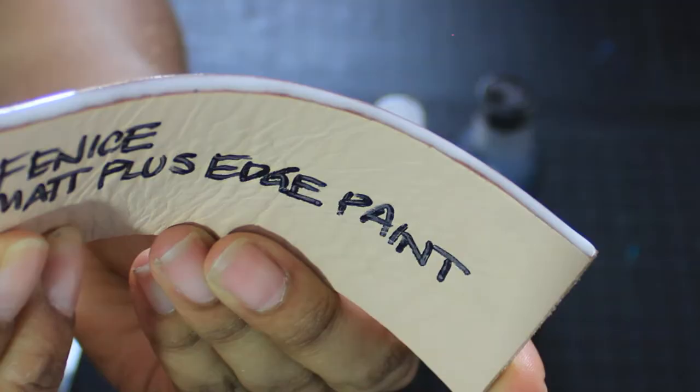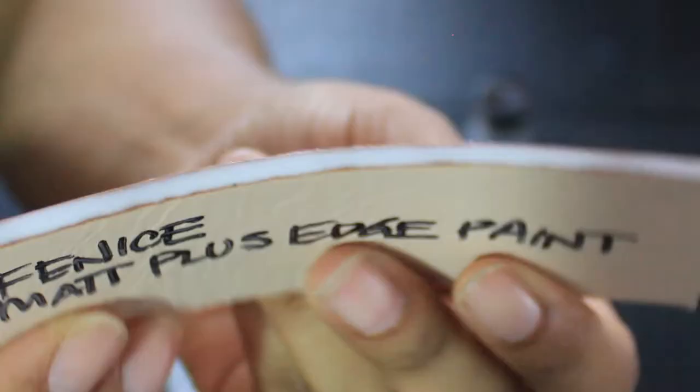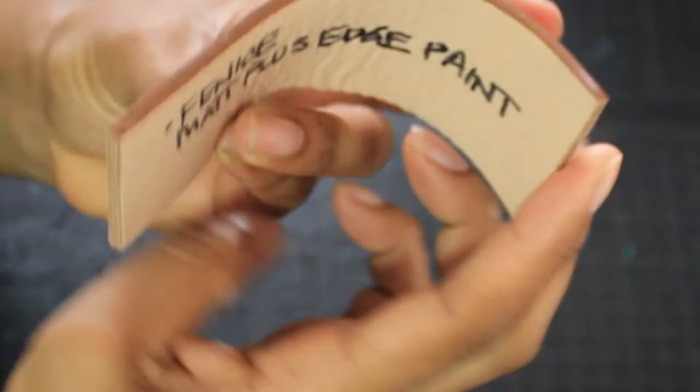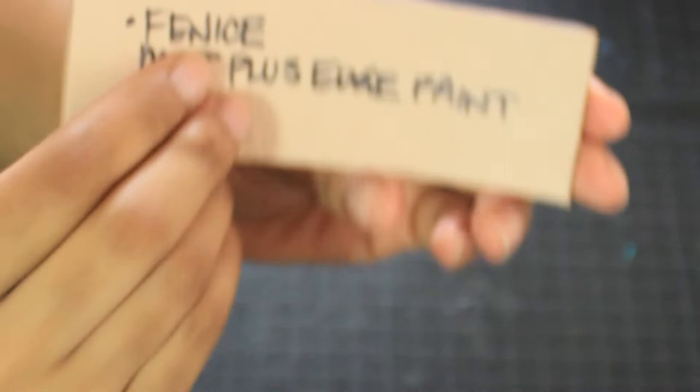The edge paint will then sit on top of this. In terms of the steps, you apply the base coat first, allow it to dry, sand the surface slightly, then apply the edge paint. Allow to dry.